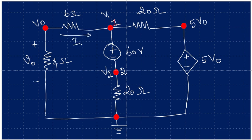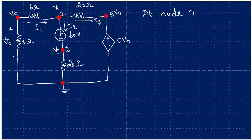Now we can take the current directions for nodal analysis. Let us assume that I1 current will be flowing into this path, and I2 current will be leaving, and here also I3 current is leaving. At Node 1, applying KCL: the incoming current is I1 and the leaving currents are I2 and I3.